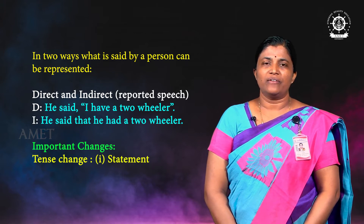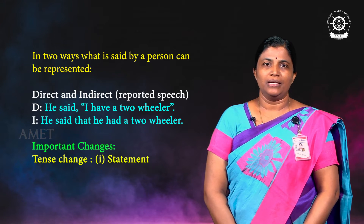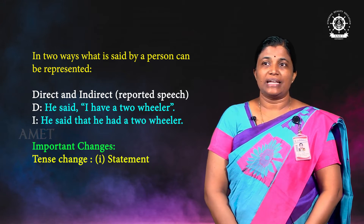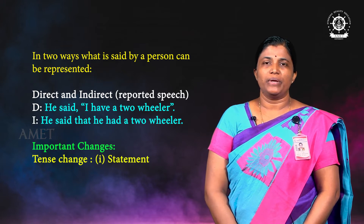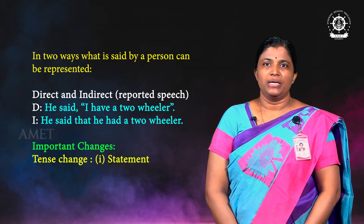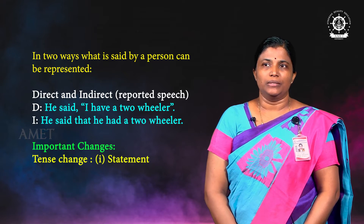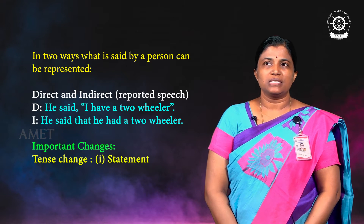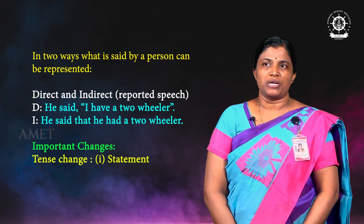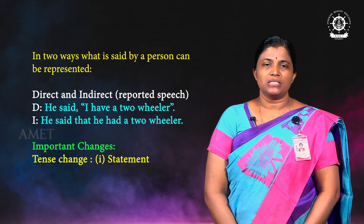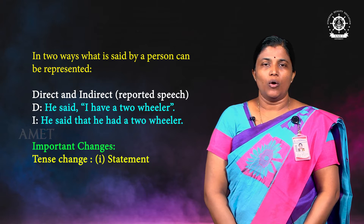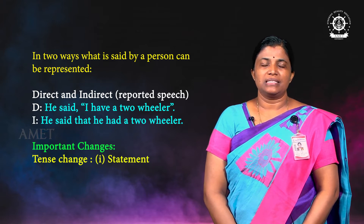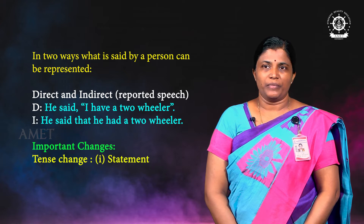Direct speech can be uttered this way: 'He said, I have a two-wheeler.' We are telling directly what someone said. In indirect speech it becomes: 'He said that he had a two-wheeler.' So other speech can be reported in two ways — in a direct way or in an indirect way. There are certain changes we need to observe when we change direct into indirect.